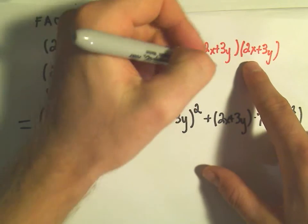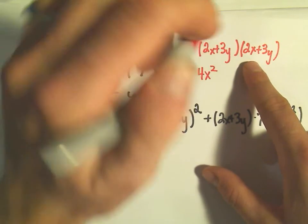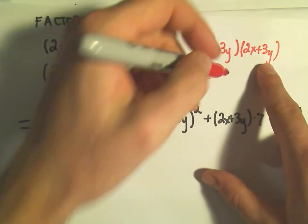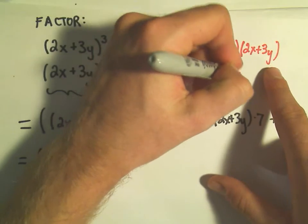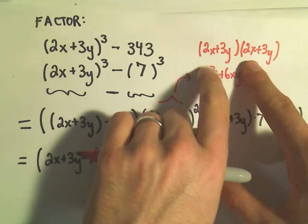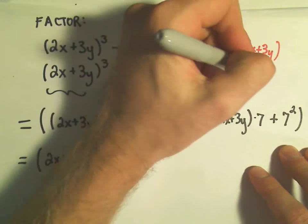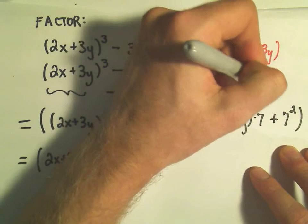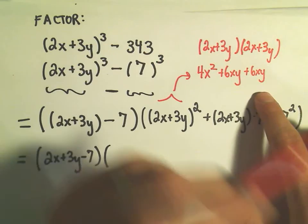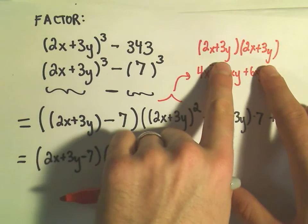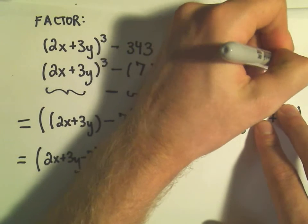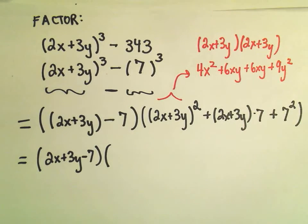We would get 2x and 2x which would be 4x squared. We would get 2x and 3y which would be 6xy. We would take 3y and 2x, again that would give us another 6xy. And then 3y and 3y would be 9y squared. So there's the first term.